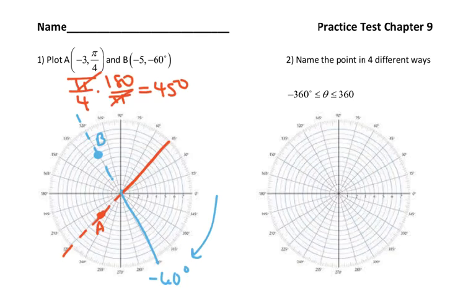Remember, if the radius is not negative, you don't go the other direction. So if instead this said positive 3 pi over 4, you would have plotted it here.